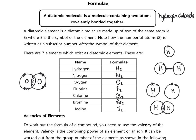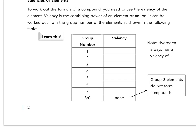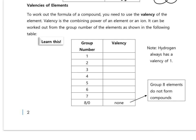When writing the formula of a compound, you need to know the valency of the element or ion you're working with. You can get your valency from your group number. If it's in group one it has a valency of one; group two, a valency of two; group three, a valency of three; group four, a valency of four. Then we count back down: group five has a valency of three, group six has a valency of two, and group seven has a valency of one. So it goes 1-2-3-4-3-2-1 across the periodic table.